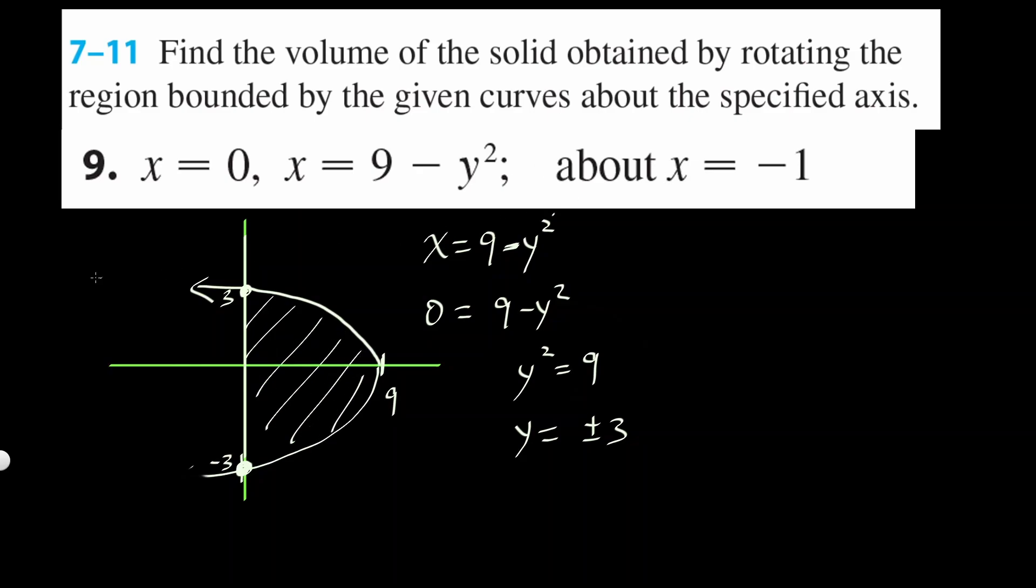But we're going to rotate it about x equals negative 1. So x equals negative 1 is going to be this line right there. Let's imagine this is x equals negative 1. We're going to rotate this portion right there, which is in the first and the fourth quadrant, about x equals negative 1 here.